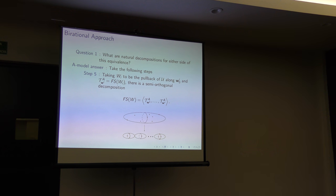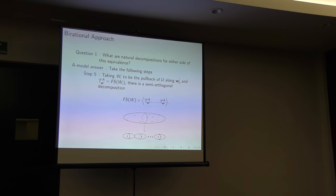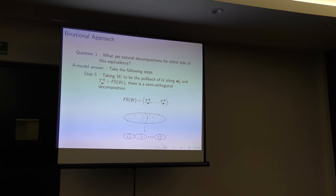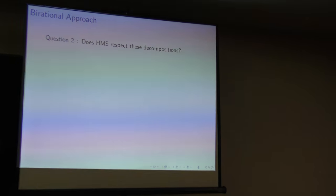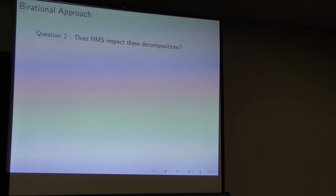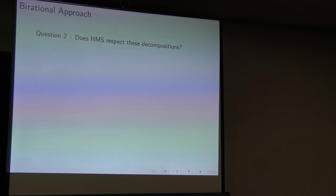What was U? U is this universal hypersurface over the moduli. Now the second question: we have a decomposition on the B-model side, and we have a decomposition on the A-model side. Is it the case that homological mirror symmetry will send one such decomposition to the other?